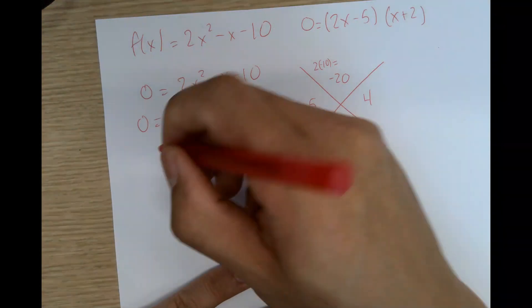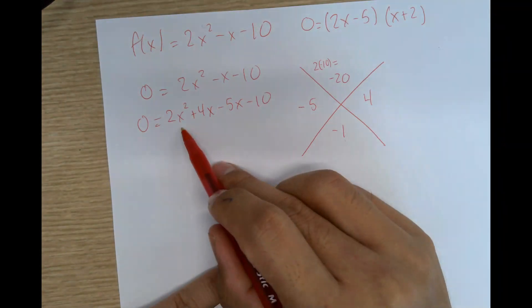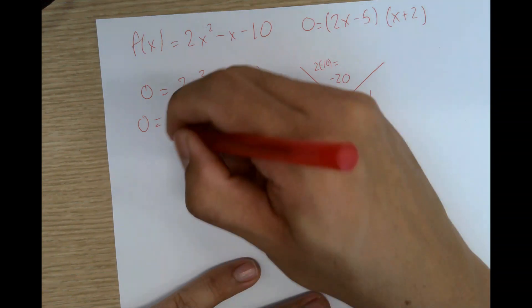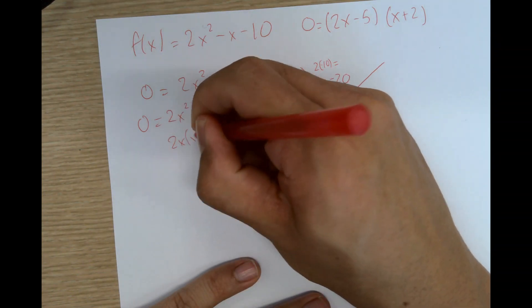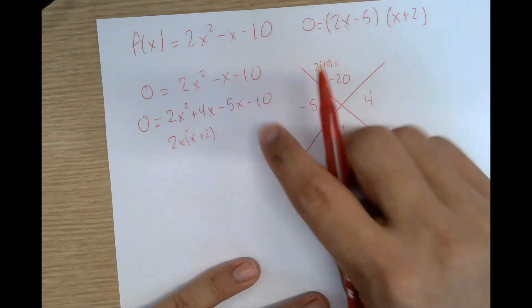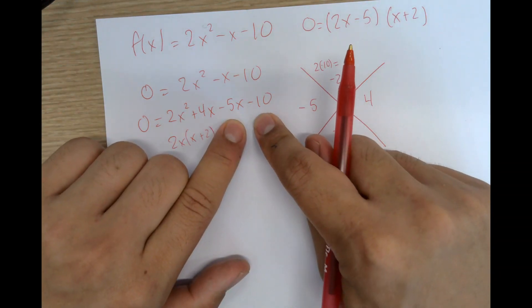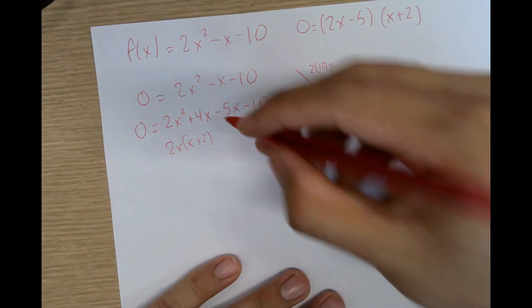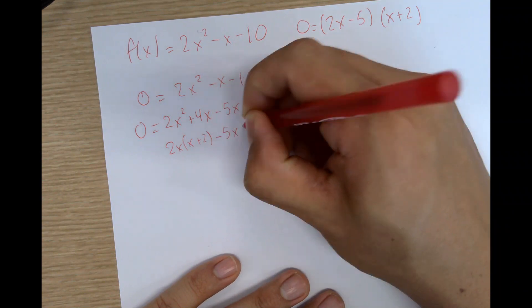So what's going to happen here is we're going to find the greatest common factor between these, which is 2x. We get x plus 2. And then we want to find the greatest common factor between -5x and -10. And we get -5 divides into x plus 2.